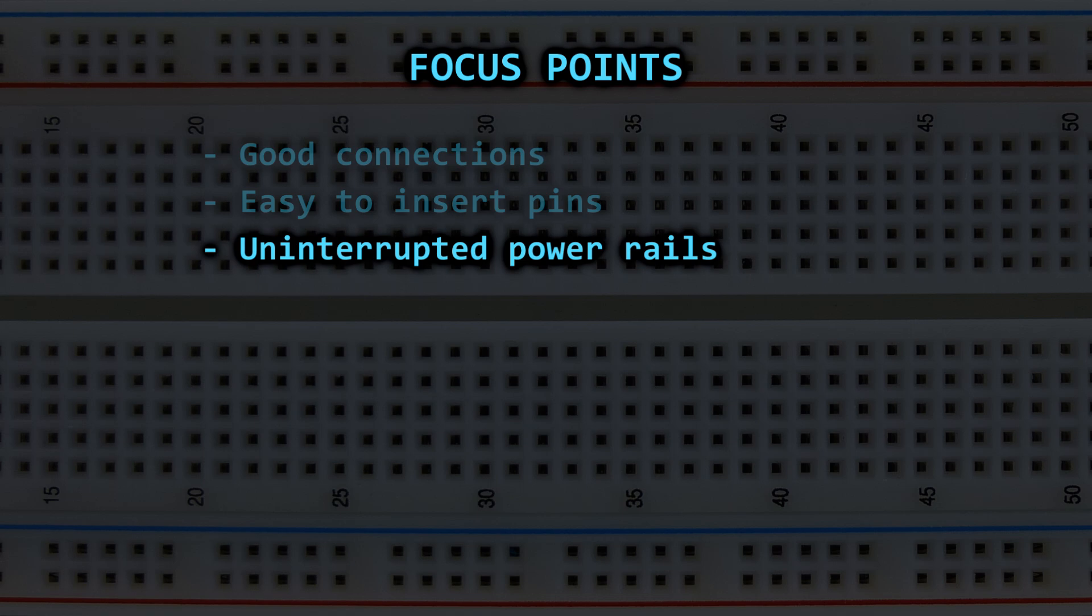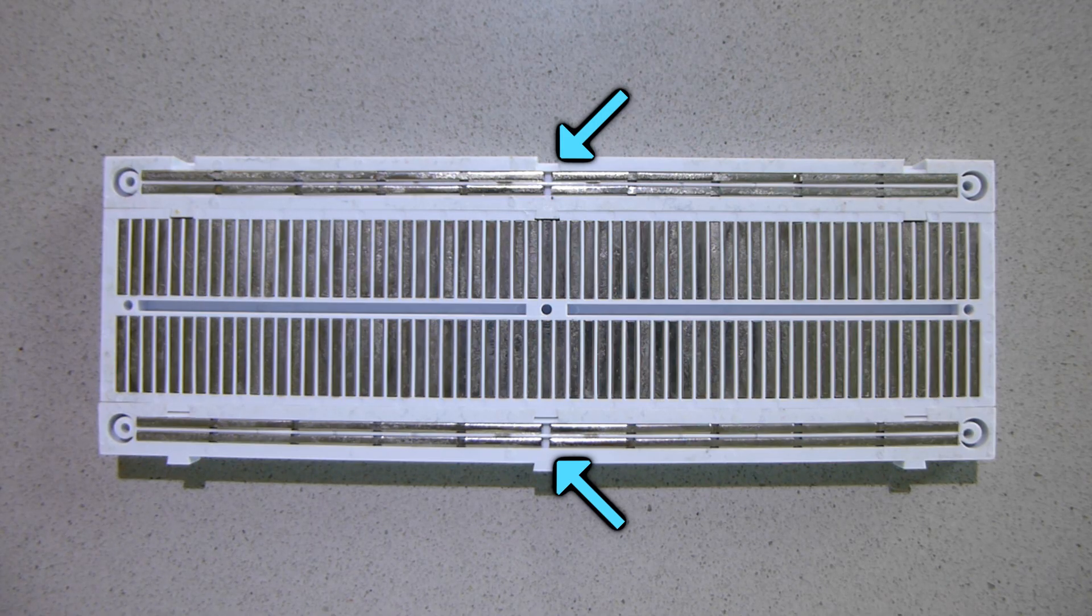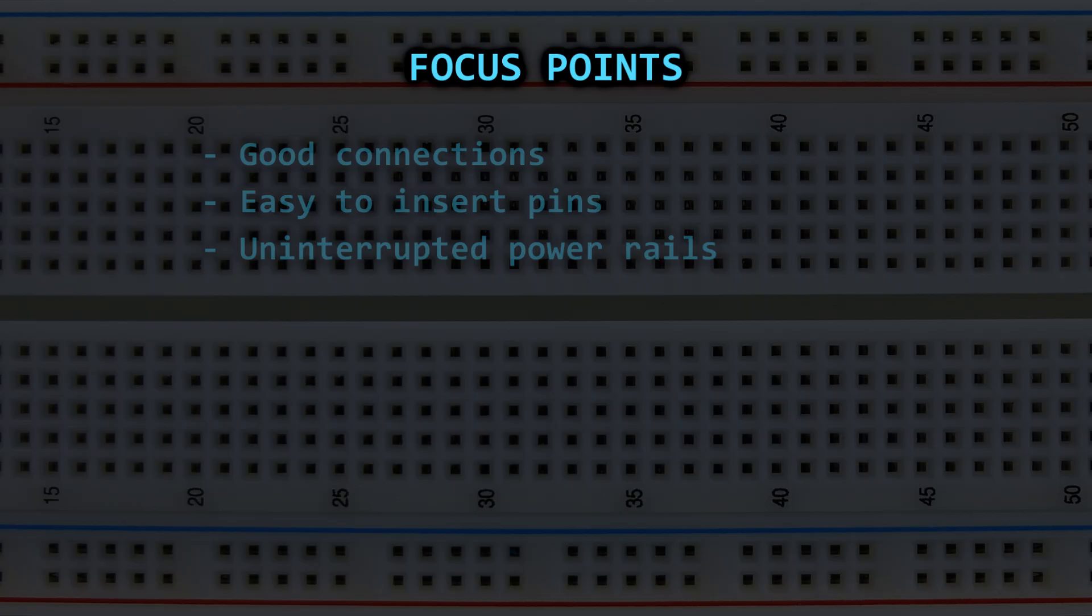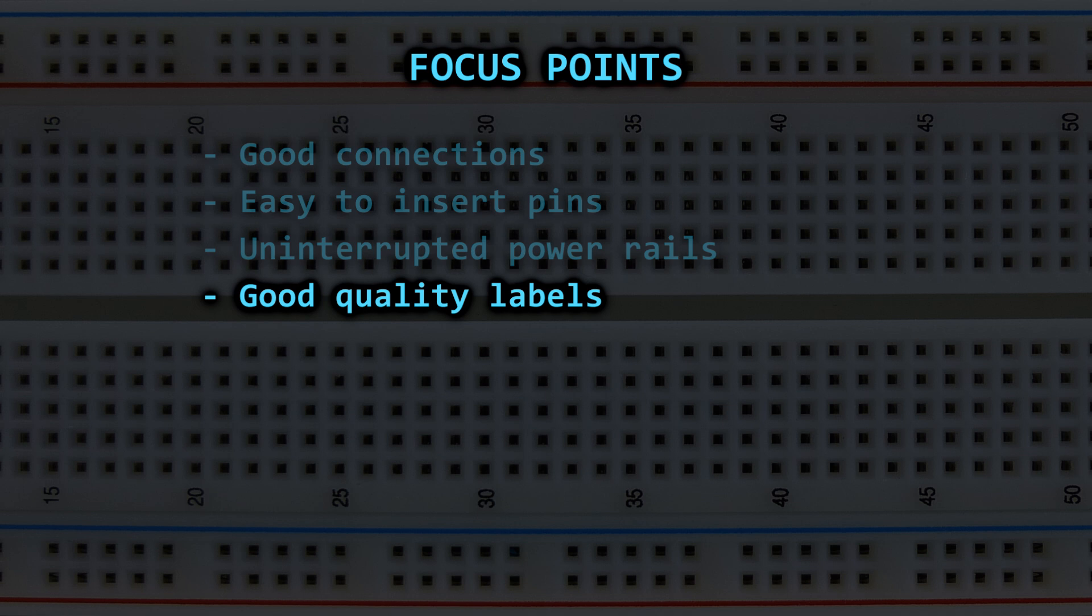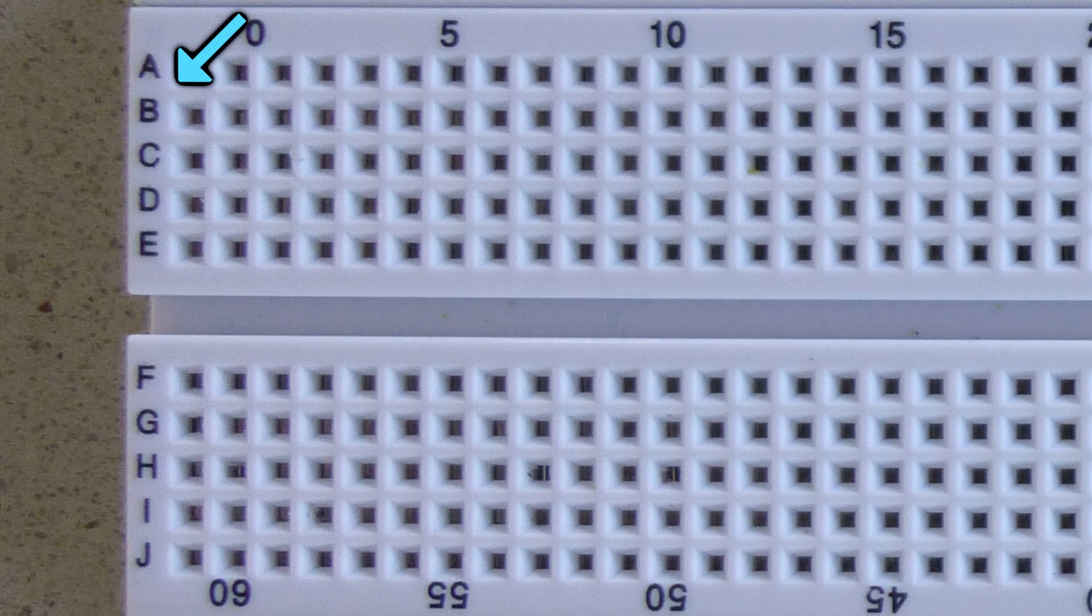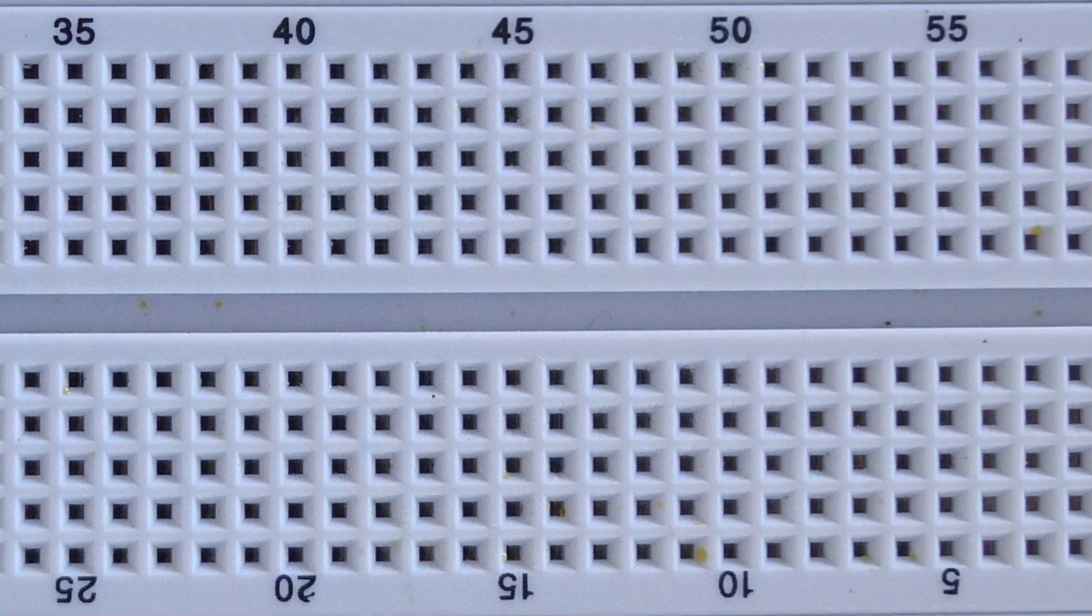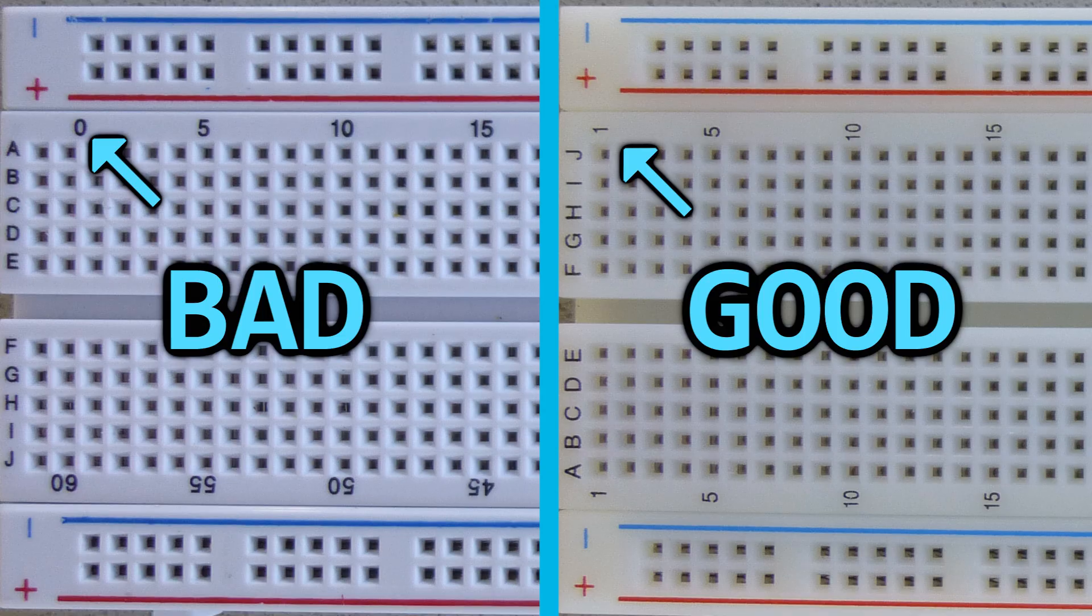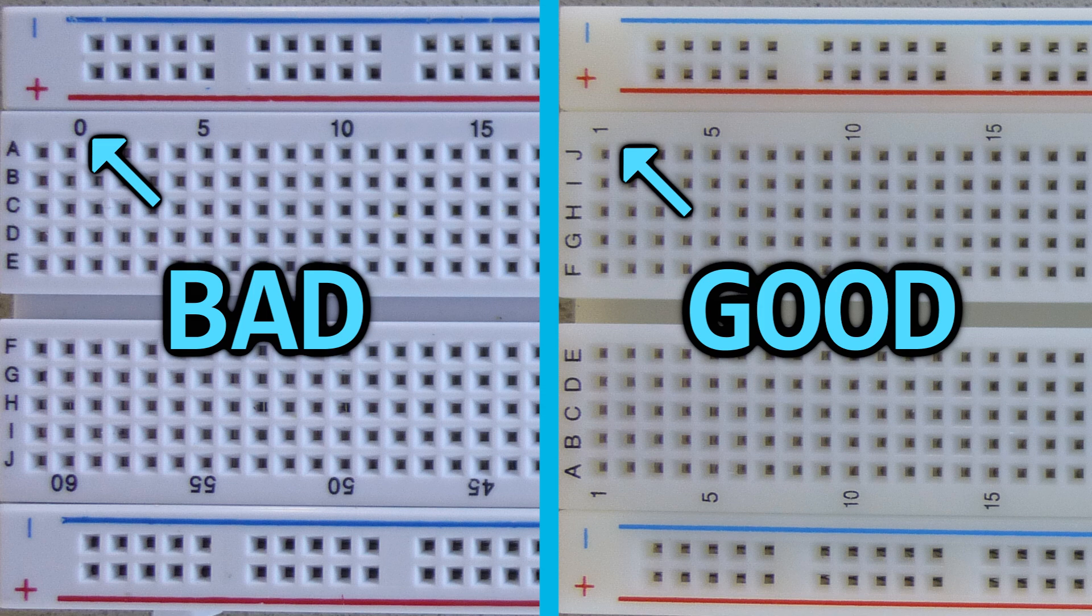Many cheap breadboards have their power rails split in the middle or even in three parts, forcing us to put jumpers which I find annoying and unnecessary. Another sign to recognize a bad quality breadboard is when the labels on one side don't match the other, which can be confusing. Also the numbers should align with the holes correctly.